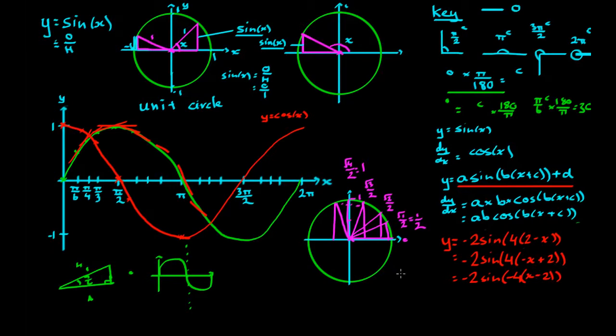And now this is very easy because a is equal to -2, b is equal to -4, c is equal to -2. dy/dx is equal to a times b times cos(-4x - 2), which is equal to -2 times -4, well that's 8 cos open bracket. Now this is -4 times x - 2. I'm just going to change it back to positive 4 times 2 - x.